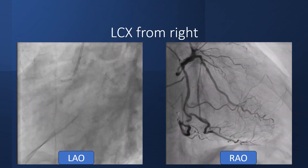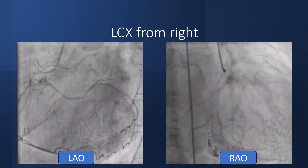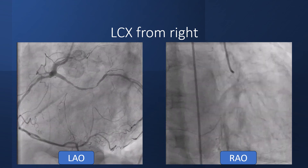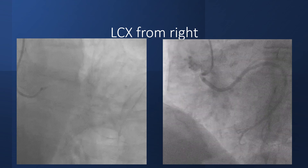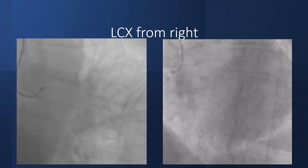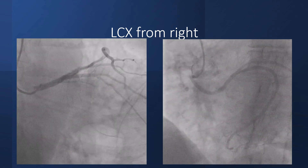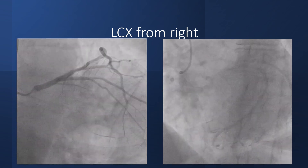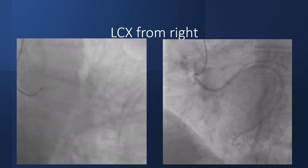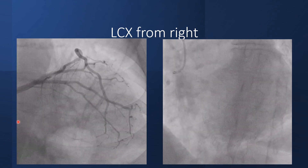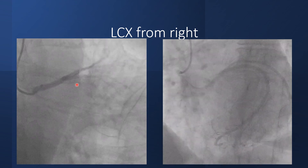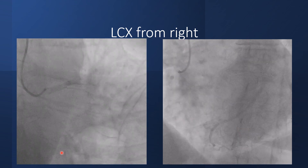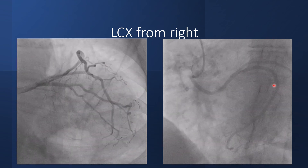It's important to know the course of each normal artery and what it supplies so that we can identify the vessel when it is anomalous. In this another case, the circumflex arises separately from the right sinus of Valsalva near the ostium of the RCA. This case is peculiar because the anomalous circumflex was dominant.